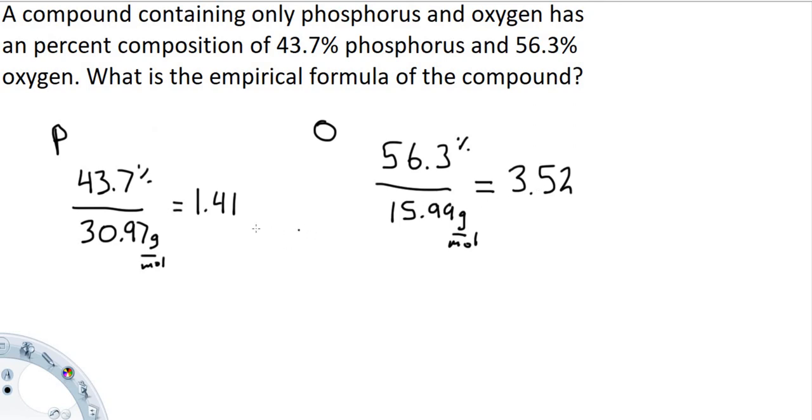The next step is, in any of these types of questions, you are going to take the lowest number. We are going to divide 1.41 into both values. So this one is just going to equal 1, and this will equal 2.496, but that's pretty close to 2.5, so we're going to say it's 2.5.